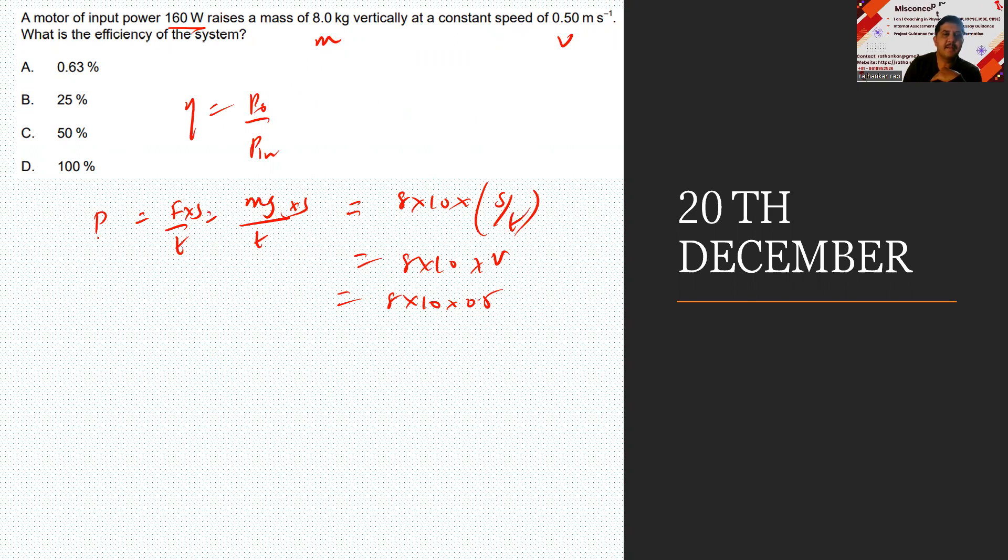This is the power I forgot. Which power is this? This is the output power. A motor of input power, so this should be output power, which should be equal to 40 watts. What is the efficiency?